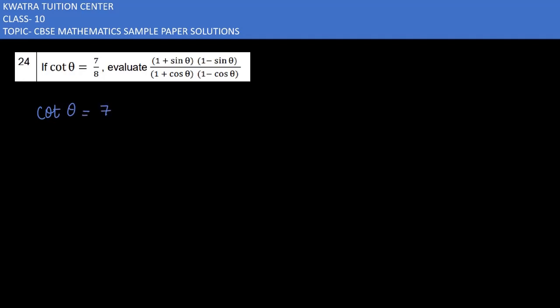First you will put this in the form of k. Cot is the reciprocal of tan. Tan's value is perpendicular over base, so cot will be base over perpendicular.